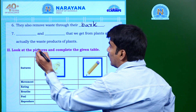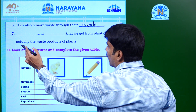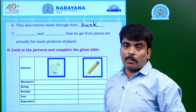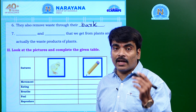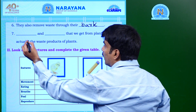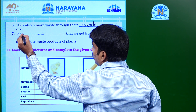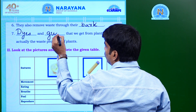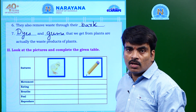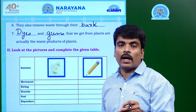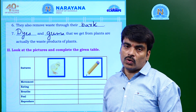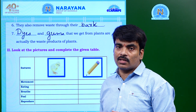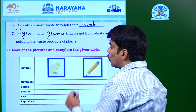Lastly, dash and dash that we get from plants are actually the waste products of the plants. We use some products of plants which are actually plant waste — they are nothing but dyes and gums. Dyes are used to impart color to clothes, and gums are used to paste things together. Now moving to the second section.